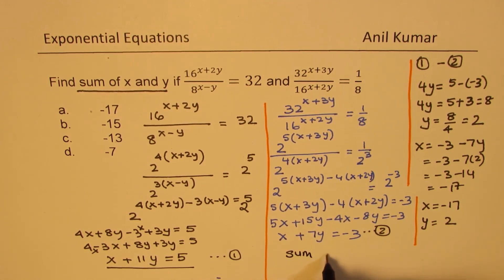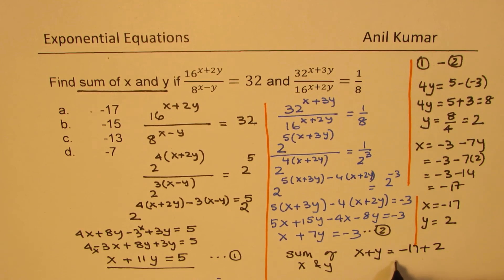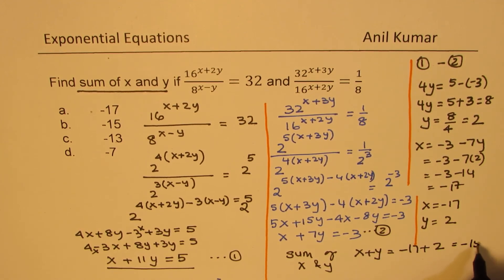So you need to add them. So sum of x and y is x plus y equals minus 17 plus 2, which is equal to minus 15.